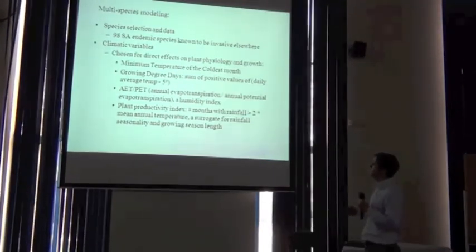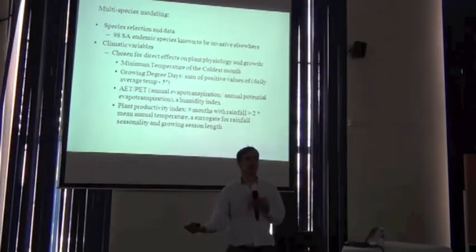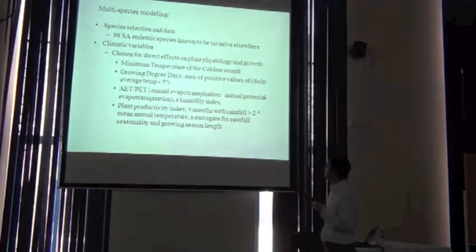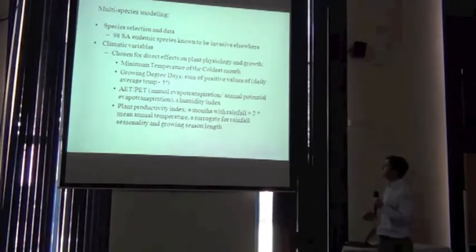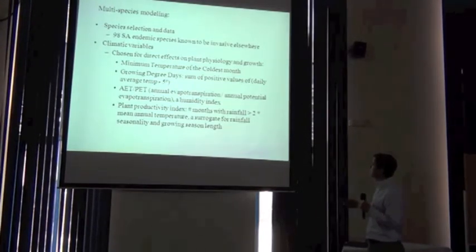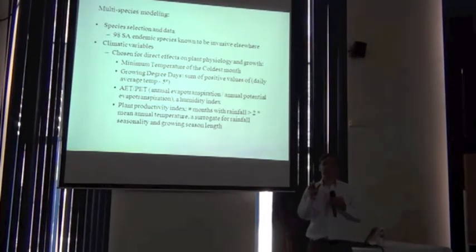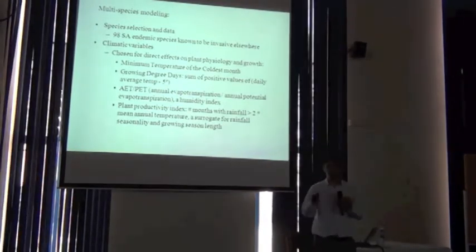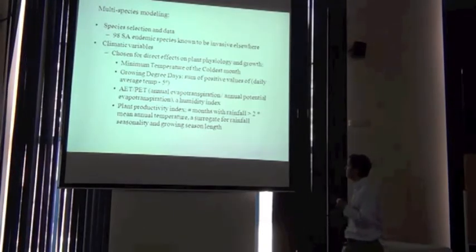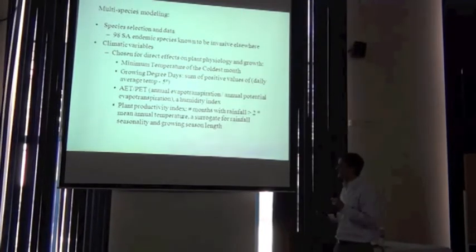They put a lot of work into generating predictive variables that were relevant for their species. Remember, we talked about this idea of not just getting a GIS database of variables and throwing them in the model, but thinking very carefully about what are the variables most important for my species. In the paper they carefully justify variables like the minimum temperature of the coldest month, which was known to be physiologically important. Growing degree days - the sum of positive values of daily temperature above a certain threshold - gives a measure of the number of days suitable for plant growth during the year. Measures of annual vapor transpiration, humidity, and plant productivity as a surrogate of rainfall seasonality, which they knew was important for these species.